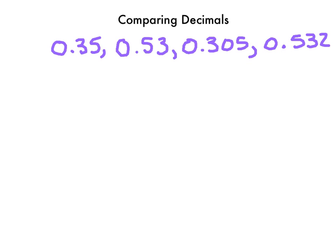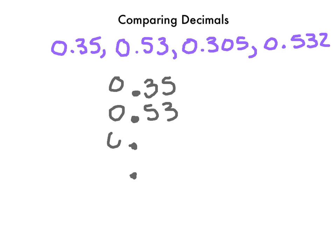So here's where we get the line-up part of the line-up and cover method. I see that I'm going to compare four decimals. So in doing so, I'm going to line up four decimals. Then I'm going to go back and I'm going to write in my digits — or my numbers. Bear with me while I do that.